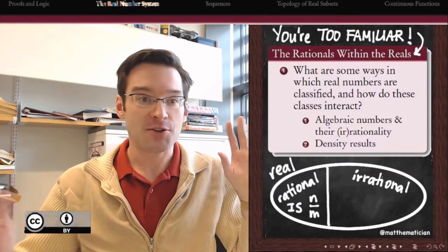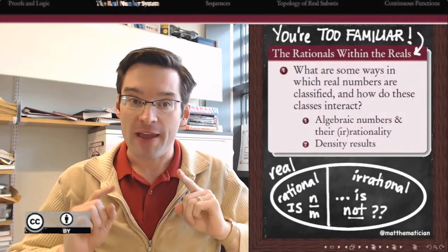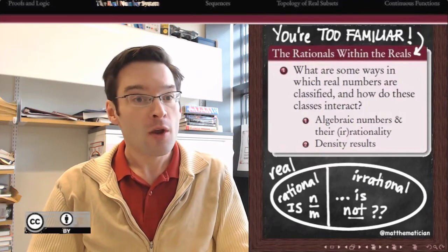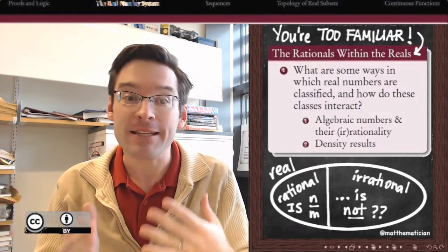I mean, you might say there are the rational numbers and there are the irrational numbers. But while we define rational numbers by what they are, ratios of integers, we define the irrationals by what they're not. And that's deeply unsatisfying.